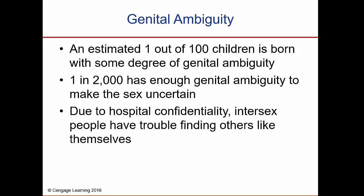This slide shows how common it is. An estimated one out of a hundred children is born with some degree of genital ambiguity. One in 2,000 has enough genital ambiguity to make the sex uncertain. Due to hospital confidentiality, intersex people have had trouble finding others like themselves.